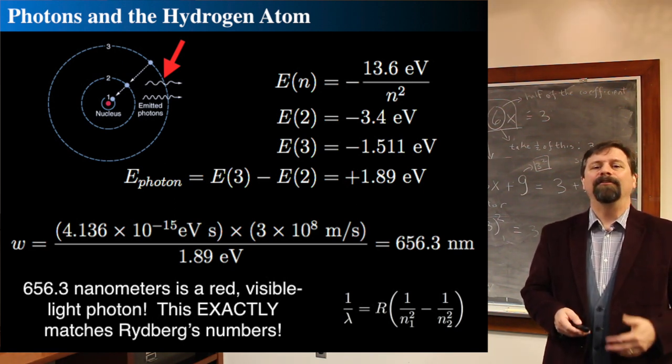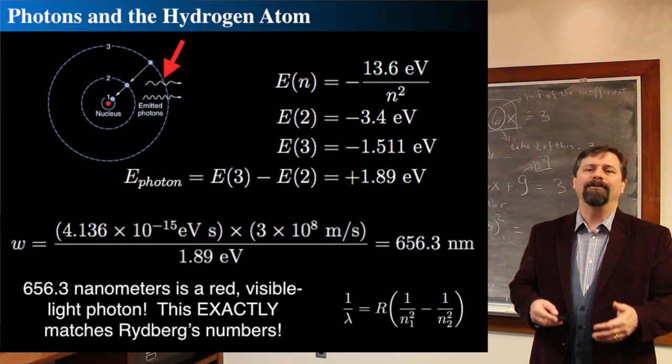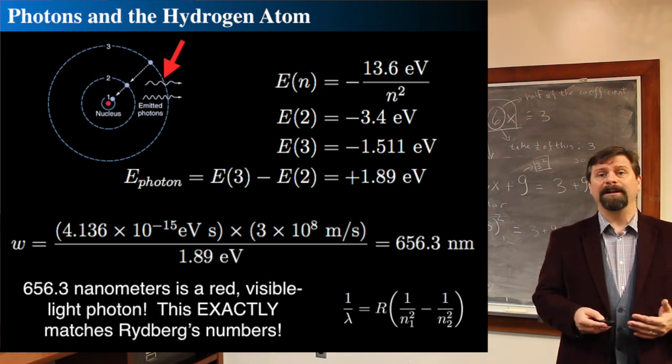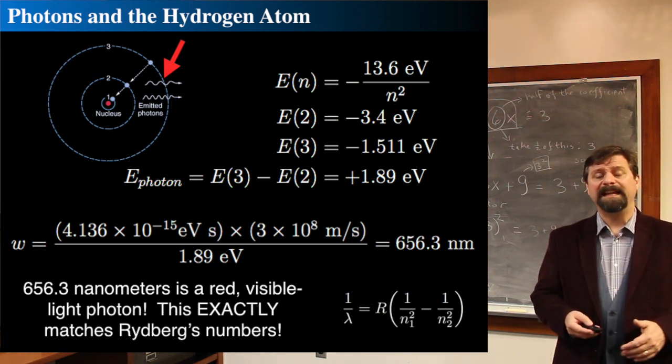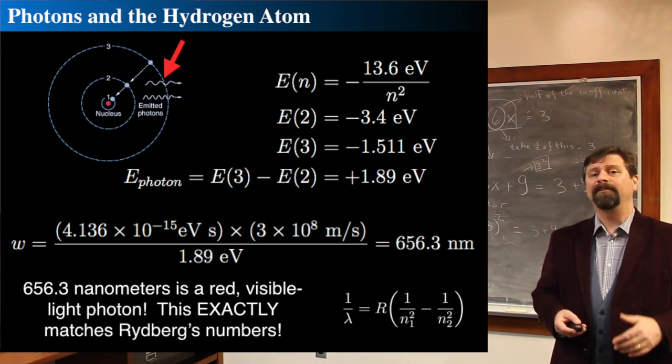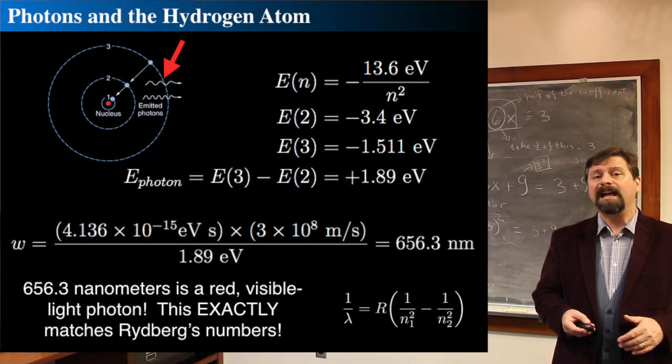So now we know — according to the Bohr model, that pink glow is due to an electron dropping from the third energy level down to the second, on its way back to the ground state, cascading and emitting this form of light. We now have a model for a very important thing: we can model the spectrum of light.